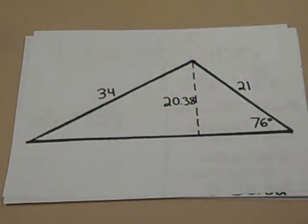With an SSA triangle, it is possible to have zero, one, or two triangle possibilities. But now that we know that the height is smaller than the two known sides, we know that there is only one triangle possible.